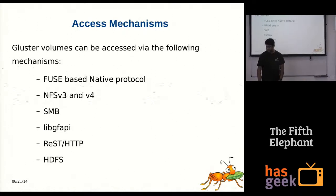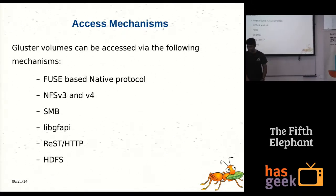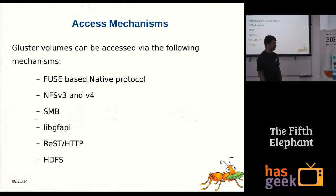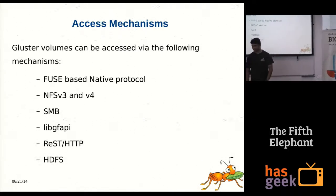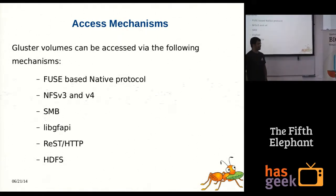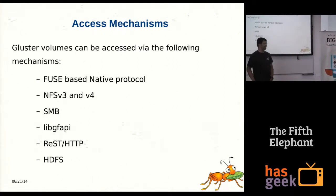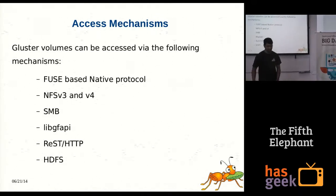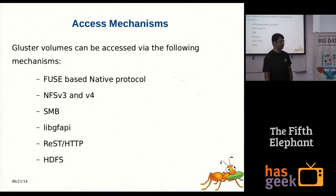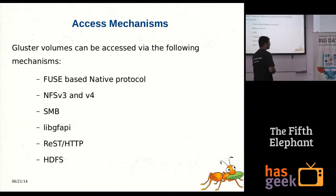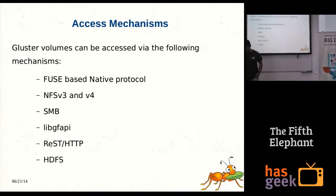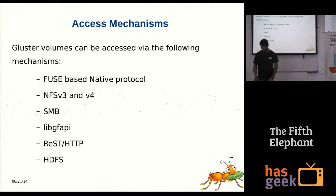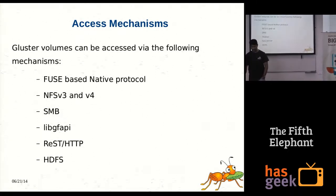The access mechanisms for GlusterFS volumes are: FUSE-based network file system in user space, where you can mount a GlusterFS volume through the FUSE protocol; NFS v3 and NFS v4, provided through the NFS Ganesha project; SMB; libgfapi, which is a native GlusterFS API library written in C that lets you develop applications that talk directly to GlusterFS; REST API; HTTP; and HDFS.